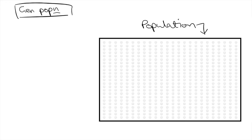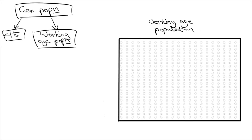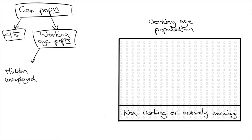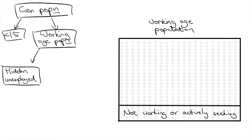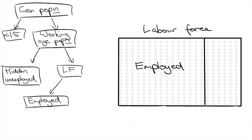Let's go through a few more key words. In our general population, we have people under 15 years old. People who are over 15 are categorized as the working age population. Within this working age population, there's a proportion of people who are not working or seeking work, which are called hidden unemployed. But for those that are, we call them the labor force. Within the labor force, people are either employed or are actively seeking but can't find a job — this is the unemployed.